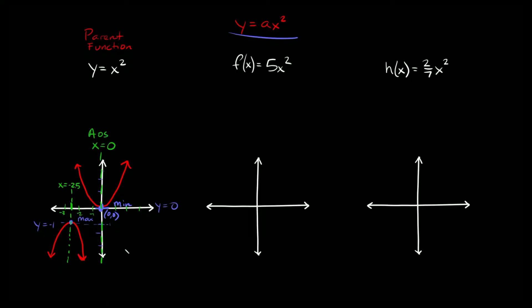The last thing you might be asked to find are the domain and range. The domain is always going to be the same for all of these parabolas — it's all real numbers. You can either write it as 'all real numbers' or using interval notation, the domain goes from negative infinity to positive infinity.